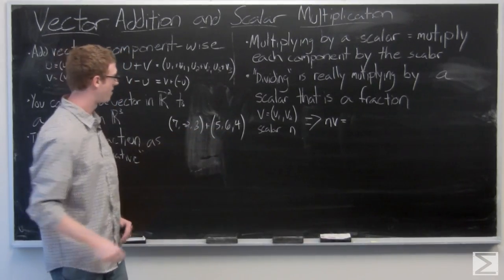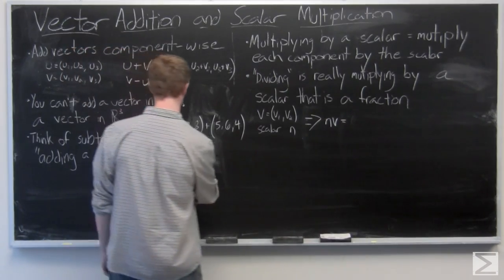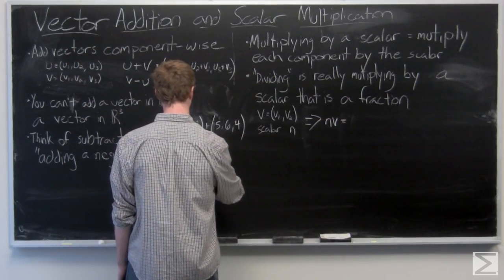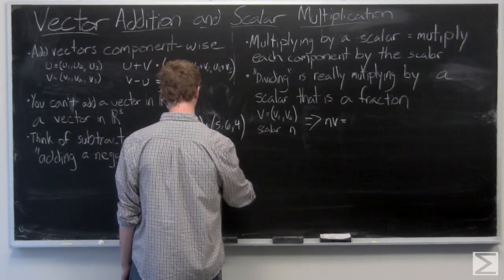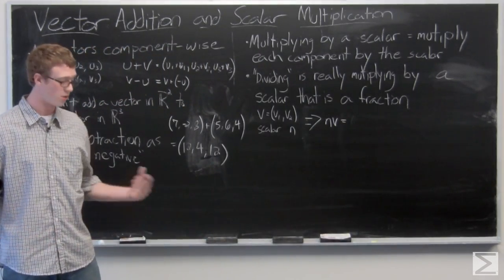The resulting vector, make sure you're adding component wise. And your resulting vector is going to be 12, 4, 12.